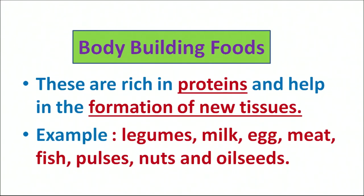The second category is body-building foods. These are rich in protein and their function is in the formation of new tissues. As discussed, cells get damaged, so for formation of new tissues we need proteins in our diet. Examples include legumes, milk, egg, meat, pulses, nuts, and oil seeds.